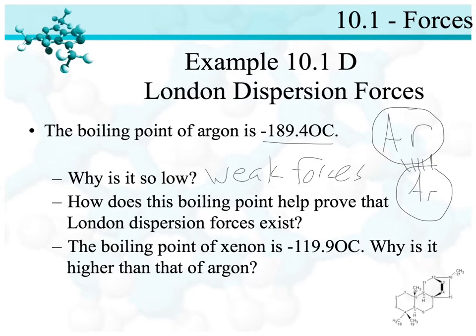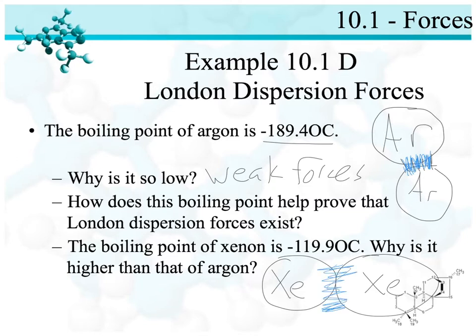Xenon is negative 119 degrees Celsius. Why is it higher? Well, xenon is a bigger atom. So when I have xenon versus the argon, argon being a little bit smaller, it's about surface area and contact. Argon has that much contact, but xenon, being a lot bigger, maybe has a little bit more contact with its neighbors. That contact means a stronger force.